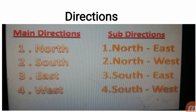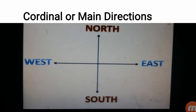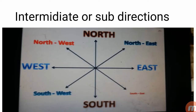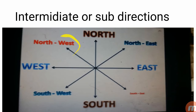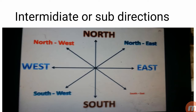The sub-directions or intermediate directions are: North-East, North-West, South-East, and South-West. इसी तरह South-East और South-West — तो ये भी चार हैं। याने intermediate directions भी चार हैं और cardinal directions भी चार हैं।